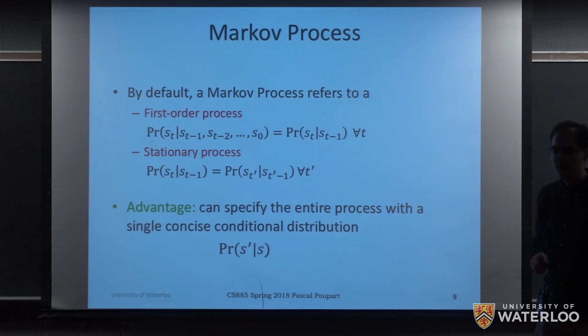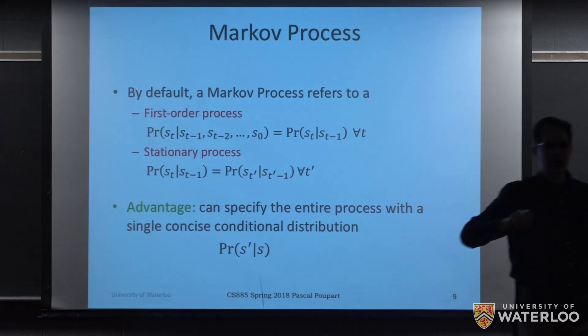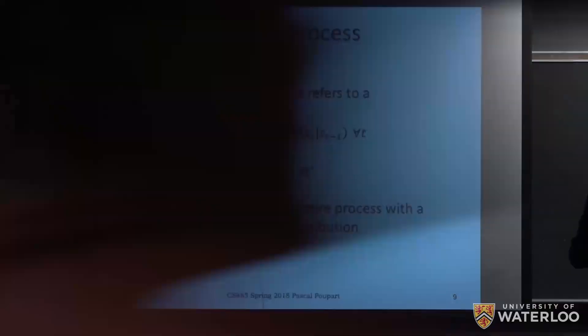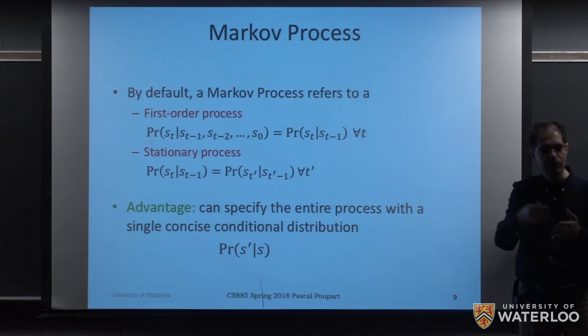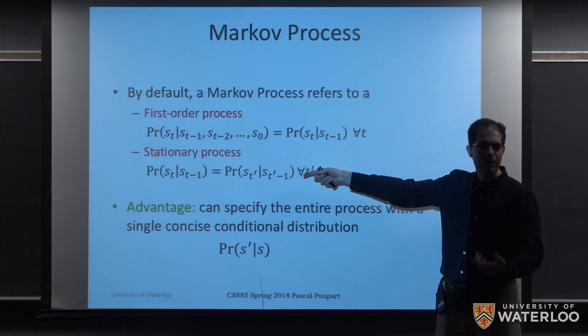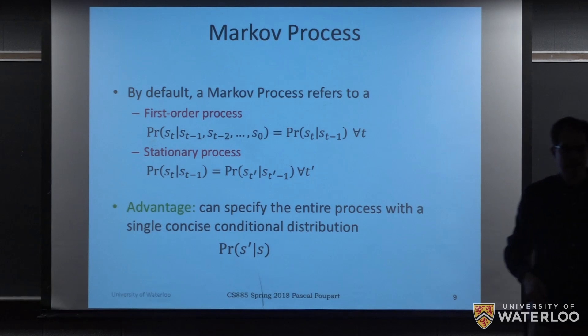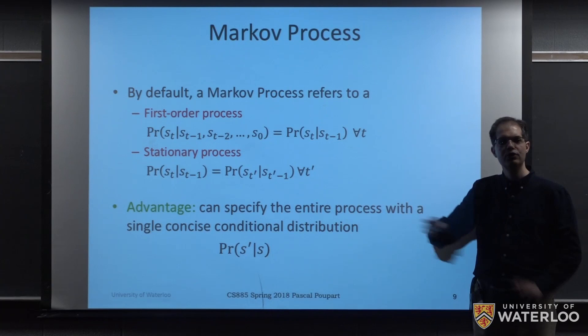Student question: For a stationary process, where is t prime defined? How are t and t prime defined — how are they different? They correspond to different time steps. I might have time step 0, 1, 2, 3, 4, 5, et cetera — every integer could be a different time step. So t and t prime could correspond to any positive integer. So you're saying that any two consecutive states are the same? That's right — any pair of consecutive states are going to be related by a conditional distribution that is the same regardless of which time step we're at.